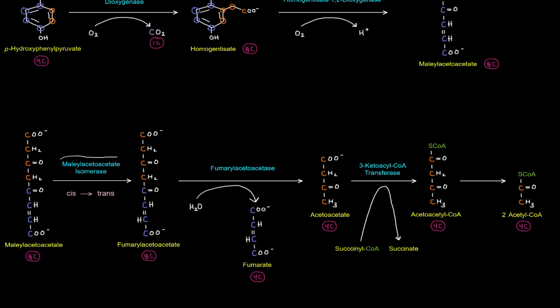This is the maleylacetoacetate isomerase reaction, turning it from the cis isomer to the trans isomer. And then this fumarylacetoacetate is cleaved such that this portion comes off as a fumarate. The carbons from those amino acids end up in fumarate, which can go to the TCA cycle and get oxidized. And then this portion ends up as acetoacetate, catalyzed by fumarylacetoacetase. That acetoacetate gives acetyl-CoA, and then the two acetyl-CoAs, as we saw in the previous video.